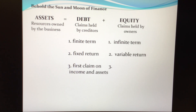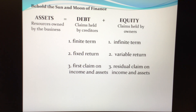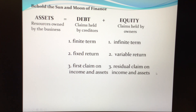Finally, debt represents a first claim on income and assets, whereas equity is characterized by a residual claim on income and assets. Each period there are certain claims — the interest payments as well as the principal payments — that creditors are due. And also, if push comes to shove and the company is forced into bankruptcy, the creditors have a prior or first claim on the assets of the company.